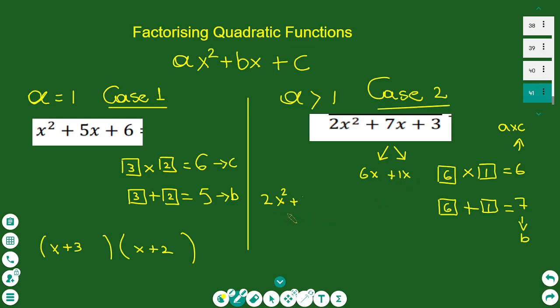Then we can write the quadratic as 2x² + 6x + 1x + 3. Then factorizing in two groups, taking the highest common factor between the two terms.